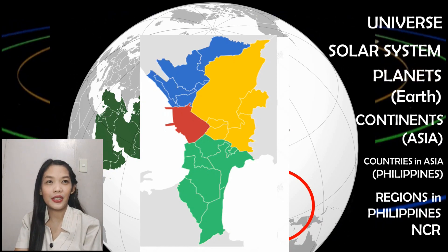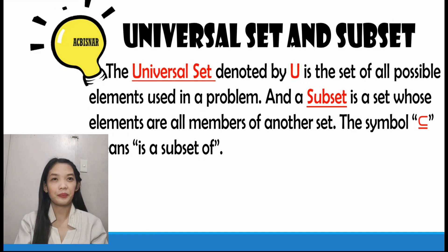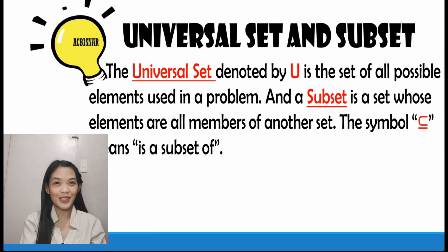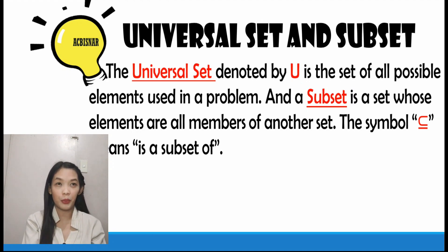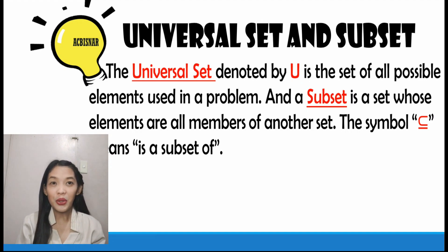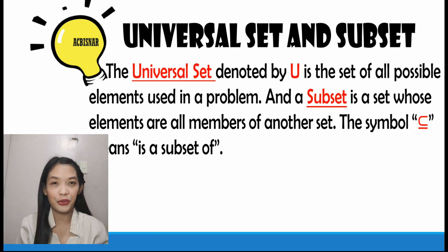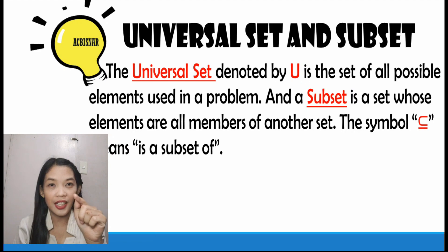How are we going to relate the following to our lesson, which is about universal set and subset? Let us define first what universal set and subset are. The universal set, denoted by U, is the set of all possible elements used in the problem — it is the set of all possible members from a given set. And a subset is a set whose elements are all members of another set.